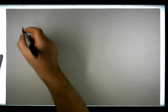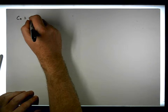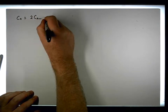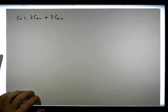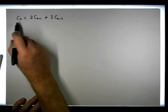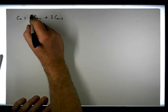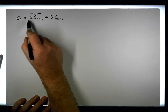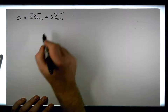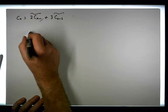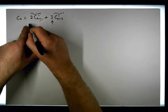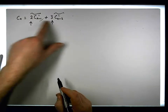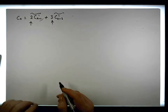Let's consider another recurrence: c(n) = 2·c(n-1) + 3·c(n-2). This is linear because the previous terms all appear on their own within terms, and it's homogeneous because they all have the same power. It has constant coefficients, and since we reference two previous terms, it is of degree 2.